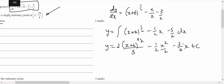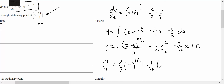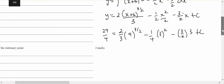And I know that y equals 29 on four when x equals three. Substituting: nine to the three on two, minus a quarter times three squared, minus three on two times three, plus c. So 29 on four equals — the square root of nine is three, so that's 27 — two thirds times 27 on three...